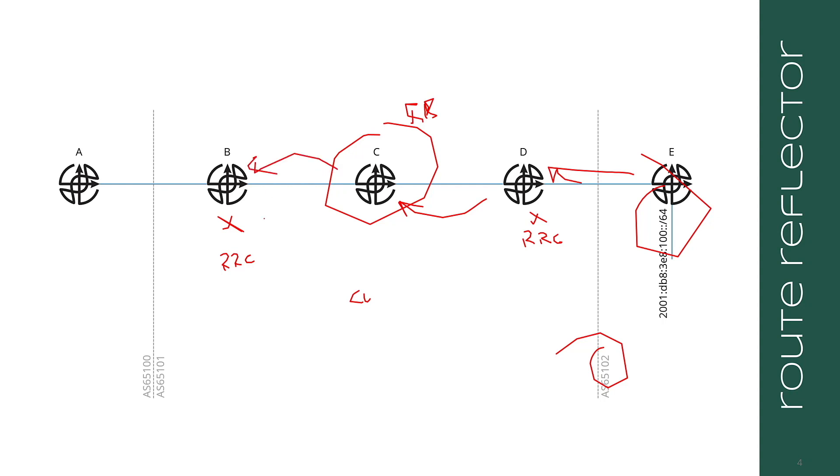Now if I advertise it to B and B decides to advertise it back to me, what happens at C is I look at the cluster list, just like I do the AS path. And I say, well, I'm already in the cluster list. So therefore, I can toss that. I don't need to deal with this. So this is how route reflectors essentially work. They just create a mini AS path within the autonomous system.